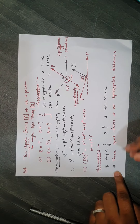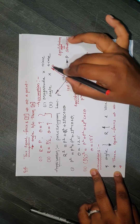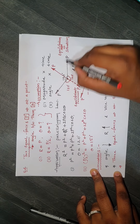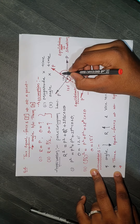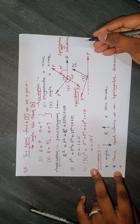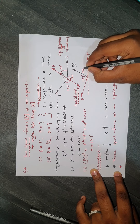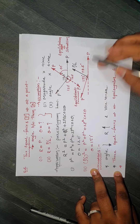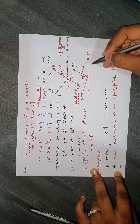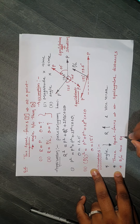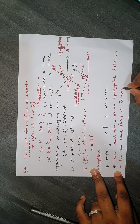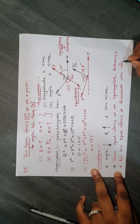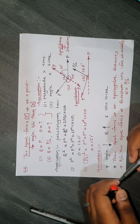Another observation: we already know the resultant always falls in between the two forces. But when the two forces are equal in magnitude, the resultant falls exactly in the middle — that means at an angle of theta/2 from each force. Between two equal forces, the resultant falls at the middle, with alpha exactly equal to theta/2.